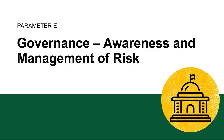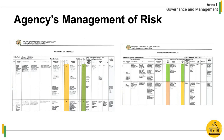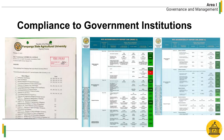Parameter E: Governance — Awareness and Management of Risk. The university, being aware of the risks encountered under each office, ensures that a risk register with its corresponding action plan is prepared by each office to mitigate the occurrence of risk, as well as the agency's preparedness in addressing identified risks. As part of the agency's awareness of risk, its compliance to government institutions has qualified the agency for the grant of performance-based bonus consistently through the years.